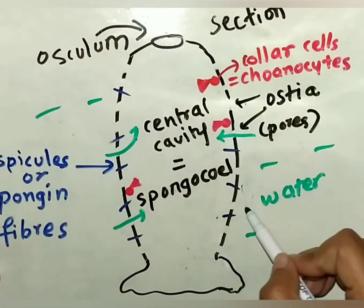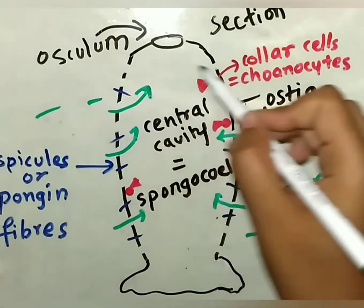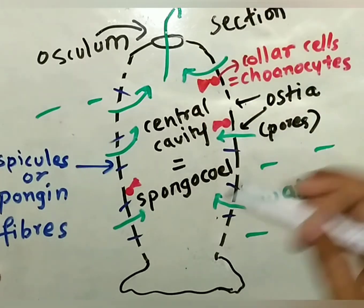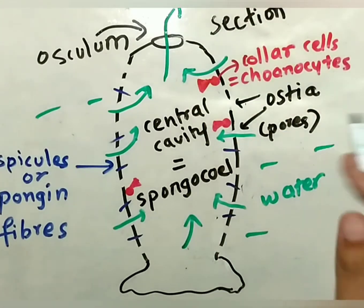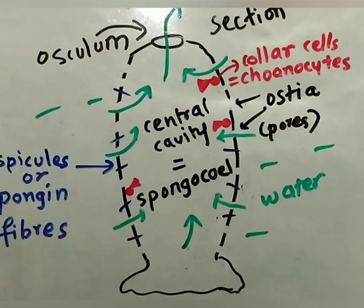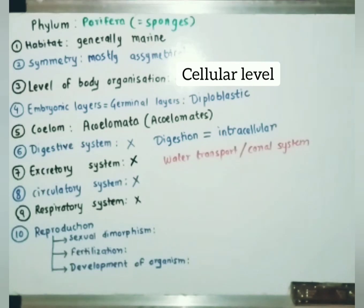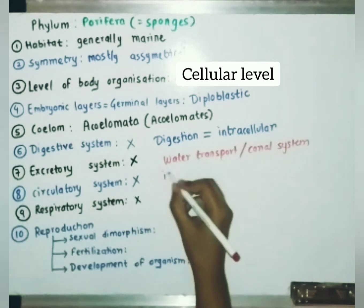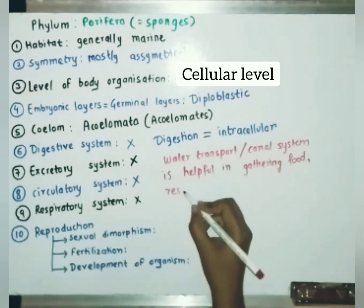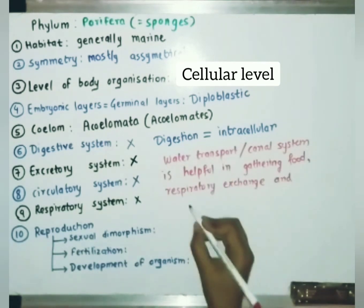Water enters through ostia in the body wall into the central cavity — the spongocoel — and goes out through the osculum. This pathway of water transport is helpful in gathering food, respiratory exchange, and removal of waste in sponges.